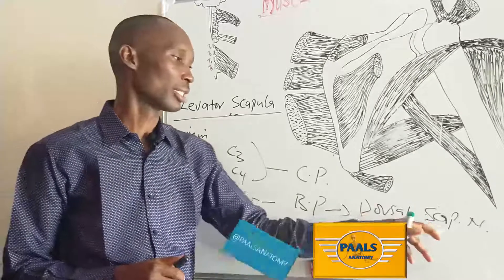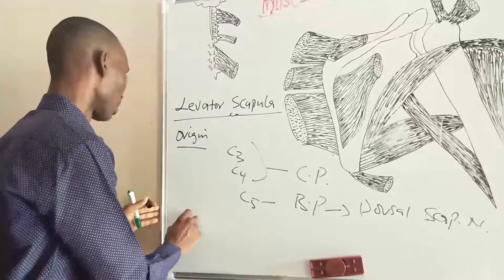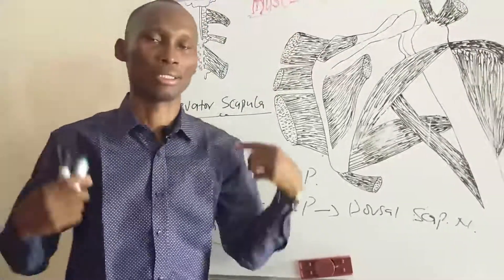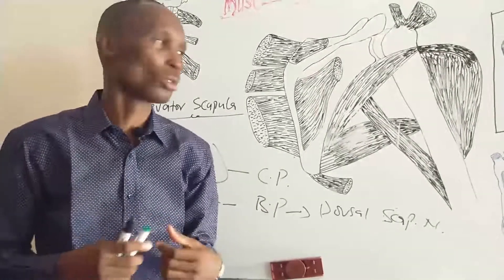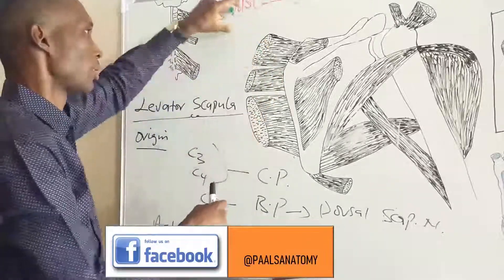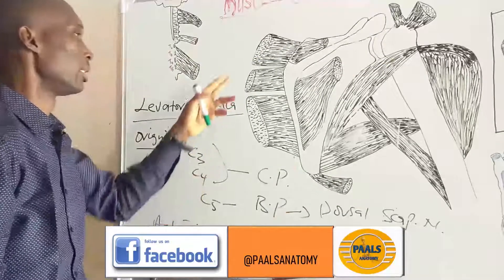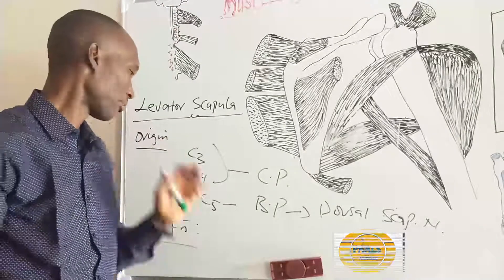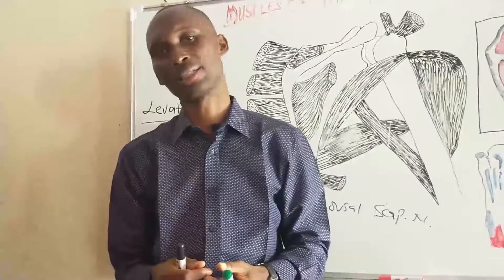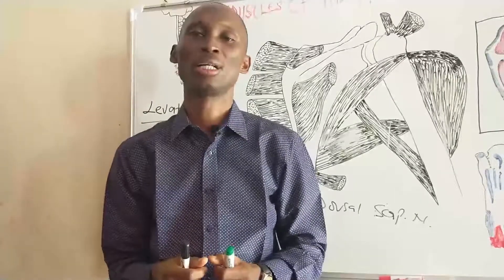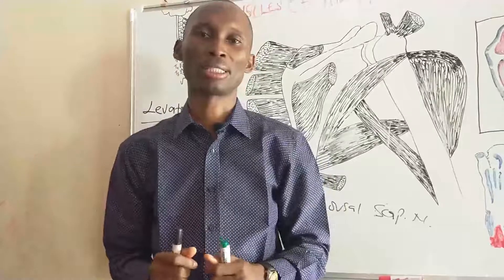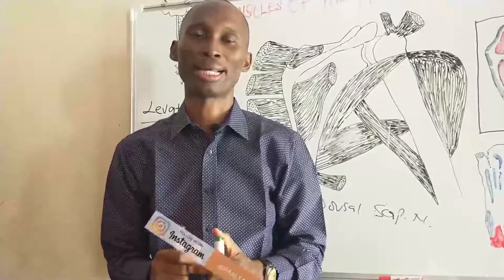Another name for the dorsal scapular nerve is the nerve to the rhomboids. The levator scapula has three actions. First, from its name, it is an elevator — it elevates the scapula. Second, it rotates the scapula downwards, involved in downward rotation of the scapula. Third, it is a lateral flexor of the neck — when the scapular attachment is fixed, it can flex the neck laterally to the right or left.